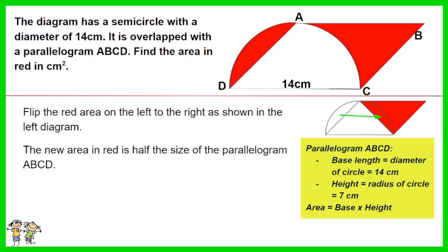Area of a parallelogram is base times height. Given the red area is only half of the parallelogram ABCD, the area is 14 times 7 divided by 2, which gives you the result of 49 cm².